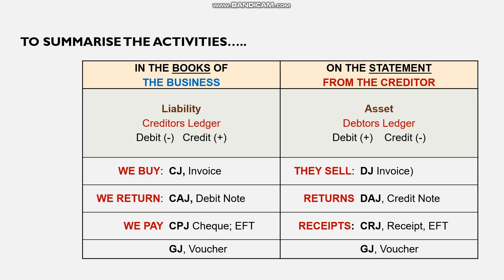To summarise: in the books of the business, the creditor is a liability — we owe them money. Because we pay on a monthly basis, it is a short-term or current liability. In our accounting equation, a liability increases on the credit side and decreases on the debit side. When we buy goods on credit, we record it in the creditors journal (CJ) and the source document is an invoice received from them.